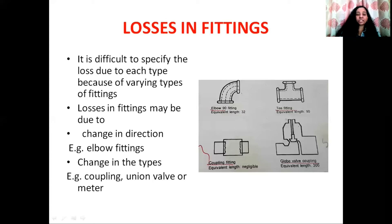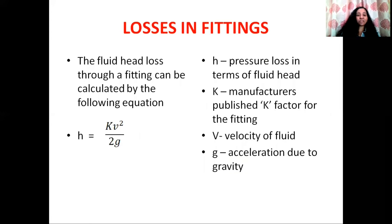It is very difficult to specify the loss of energy due to each type of fitting because a large number of fittings are available. Losses in fittings may be due to change in direction, for example an elbow fitting, or change in type, for example a coupling fitting. We can calculate the head loss due to fittings using the equation: H equals K V squared divided by 2G. Here H represents the pressure loss in terms of fluid head, K is the manufacturer's published constant, V is the velocity of the fluid, and G is the acceleration due to gravity.